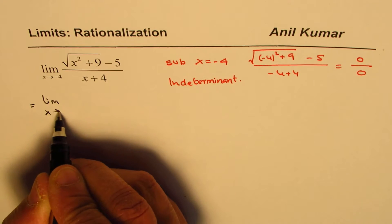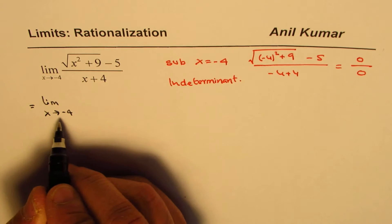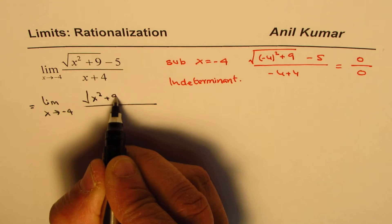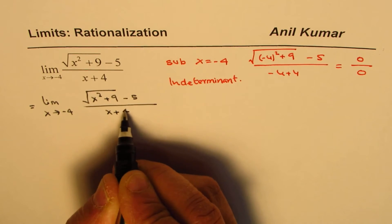So we have limit as x approaches minus 4 of square root of x² plus 9 minus 5, divided by x plus 4.